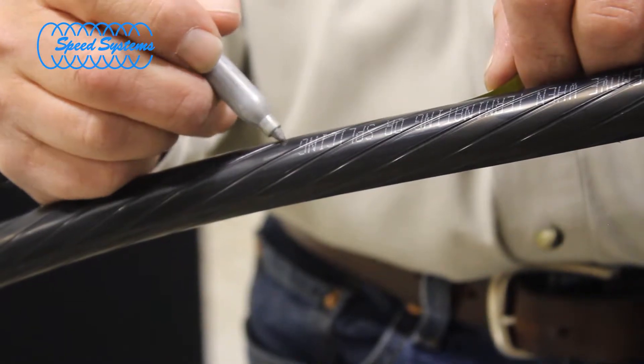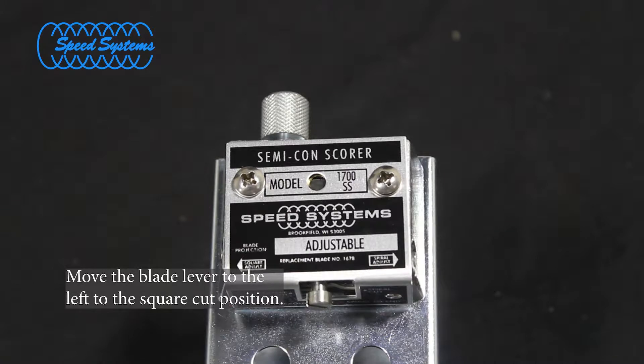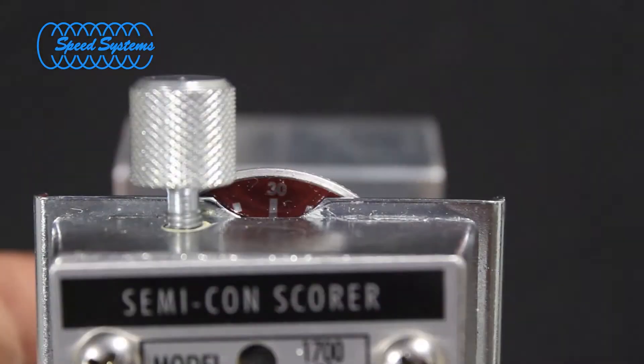Measure and mark the SEMICON strip back according to the component manufacturer's instructions. Verify that the blade lever is in the square cut position and set the SEMICON SCORER blade depth to cut through most of the SEMICON layer without cutting through to the insulation.